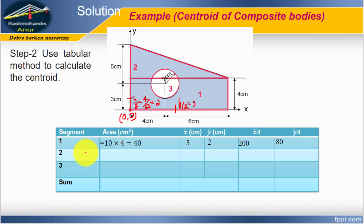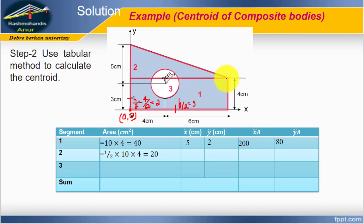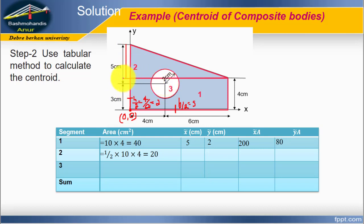Let's go to Shape 2. The area of Shape 2 — because Shape 2 is a triangle — equals one half times base times height. The base for Shape 2 is 4 cm plus 6 cm, which equals 10 cm. The height for Shape 2 is 4 cm. Don't use 5 — that is the distance from the center of the circle, not the height of Shape 2.